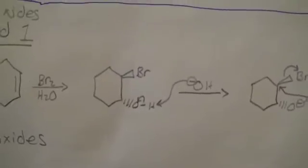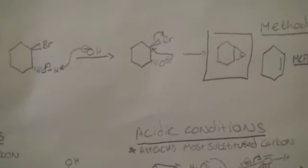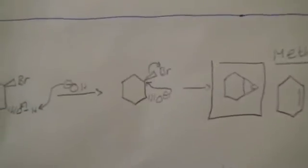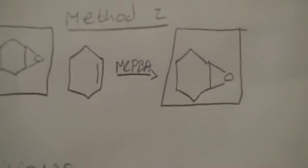And that's really important that they're antiperiplanar because then the oxygen can do a backside attack and kick off the bromine, giving you your epoxide. Also, in a really anticlimactic thing, just pop in MCPBA.